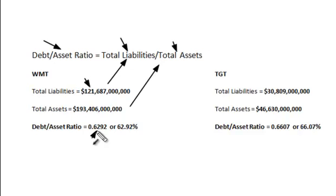That basically tells you that 62 or 63 cents of every dollar in assets is actually funded by debt. Whether that's good or bad, you have to determine by comparing it to something — compare it to the industry average or to a competitor within the same industry.